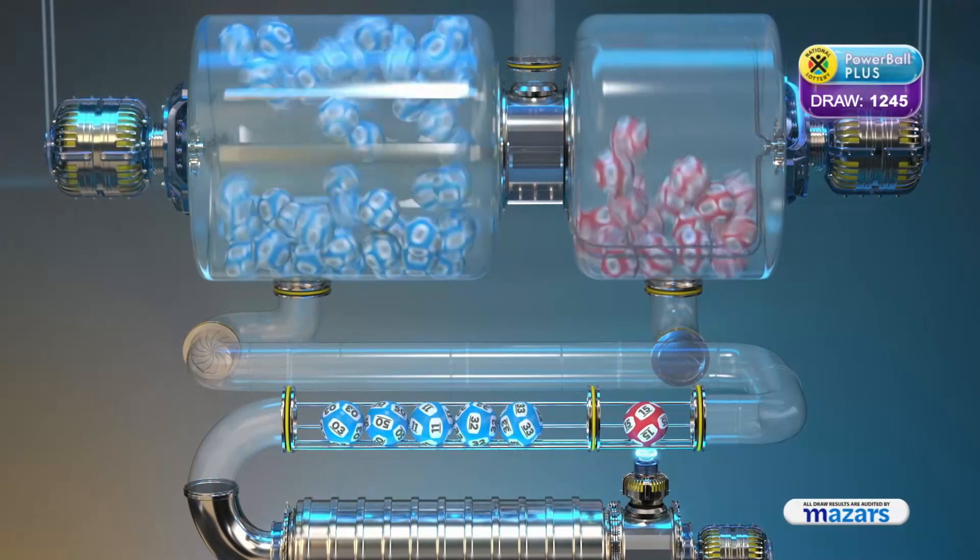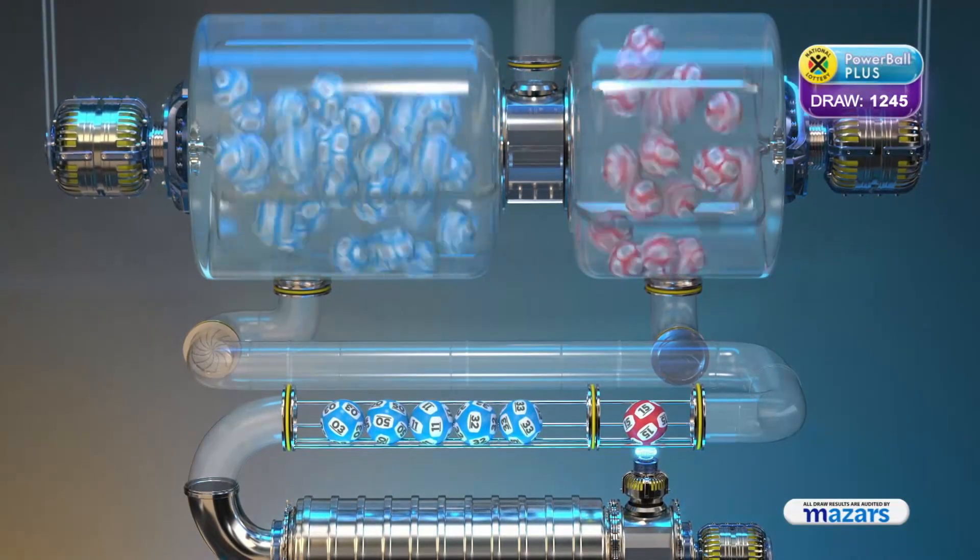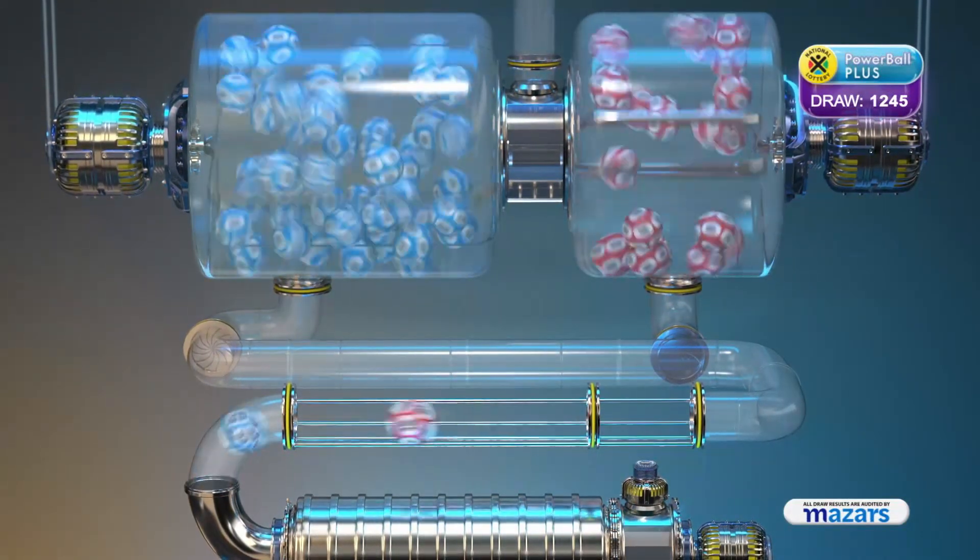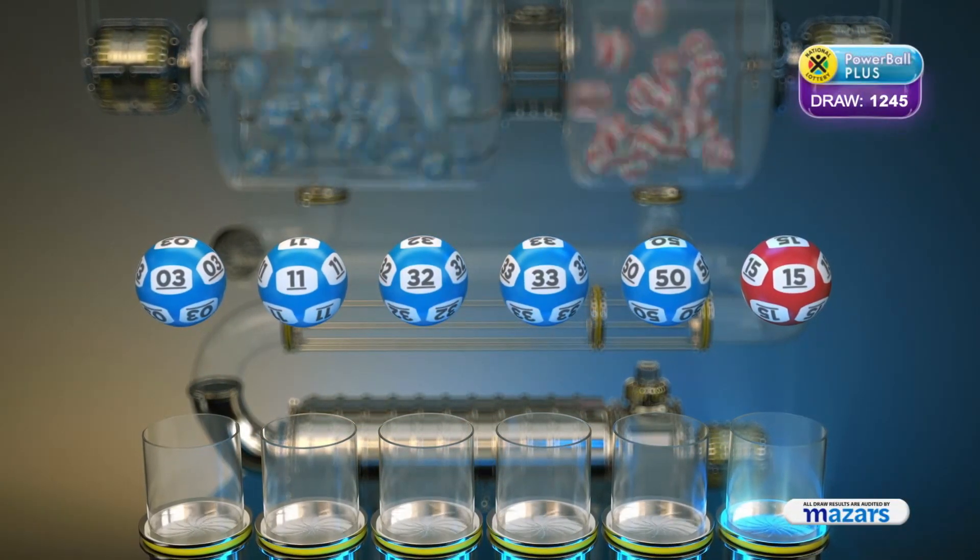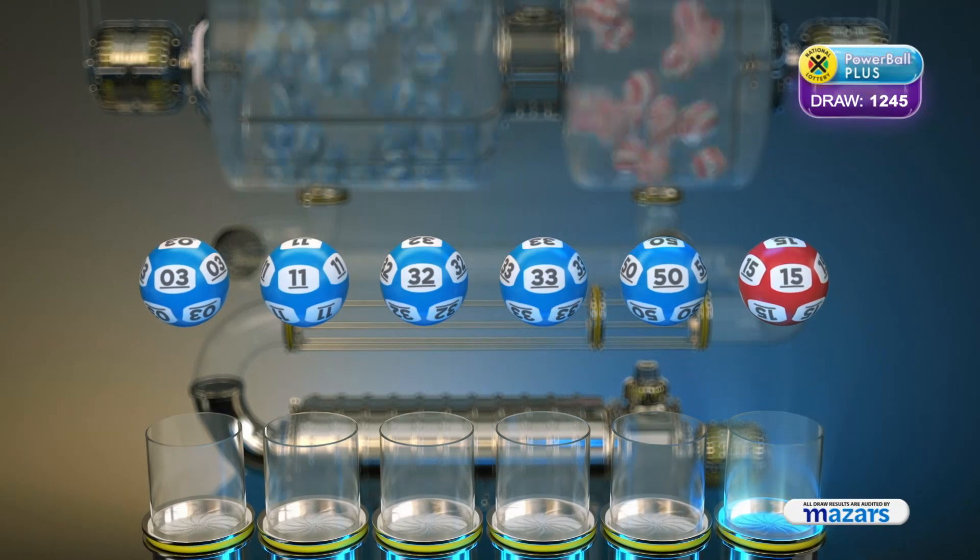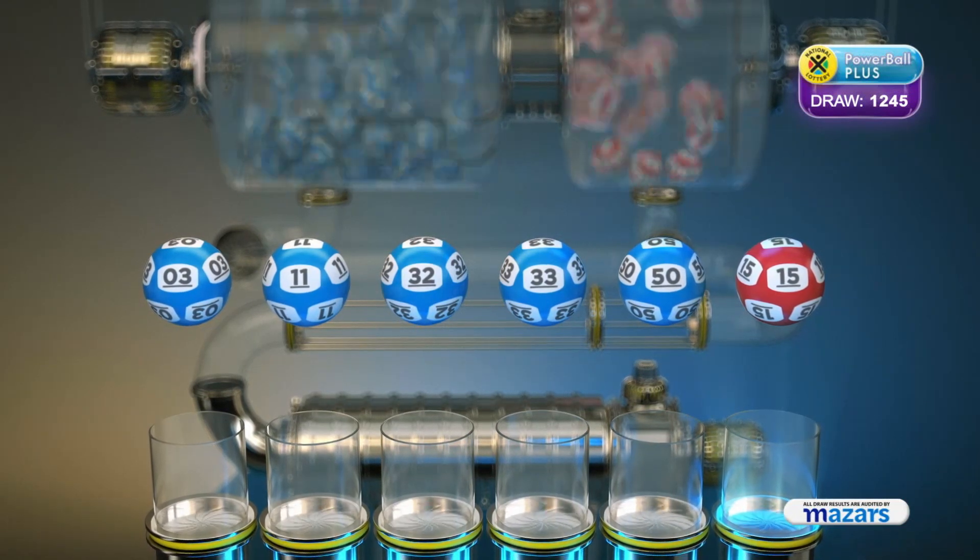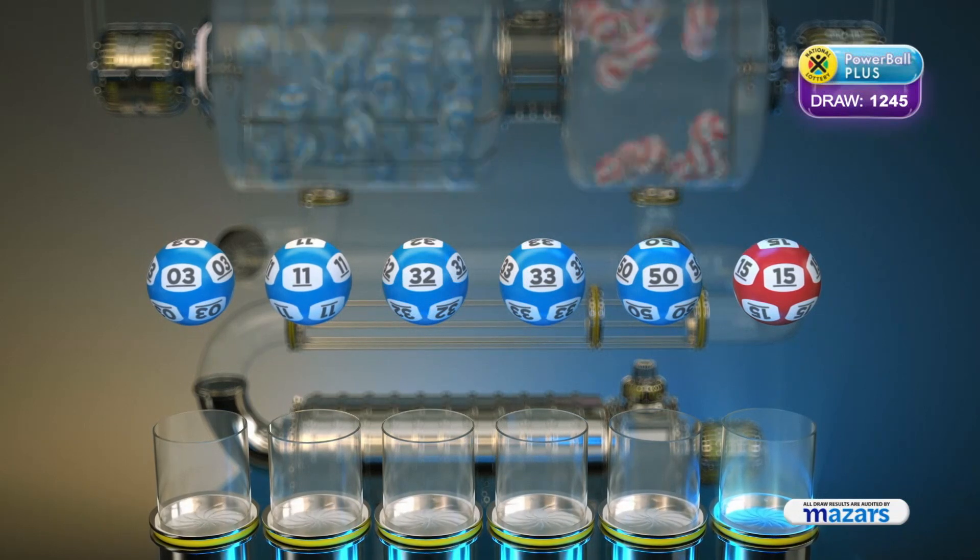And the Powerball is 50. Let's recap these numbers in numerical order. 3, 11, 32, 33, 50. And the Powerball is 50.